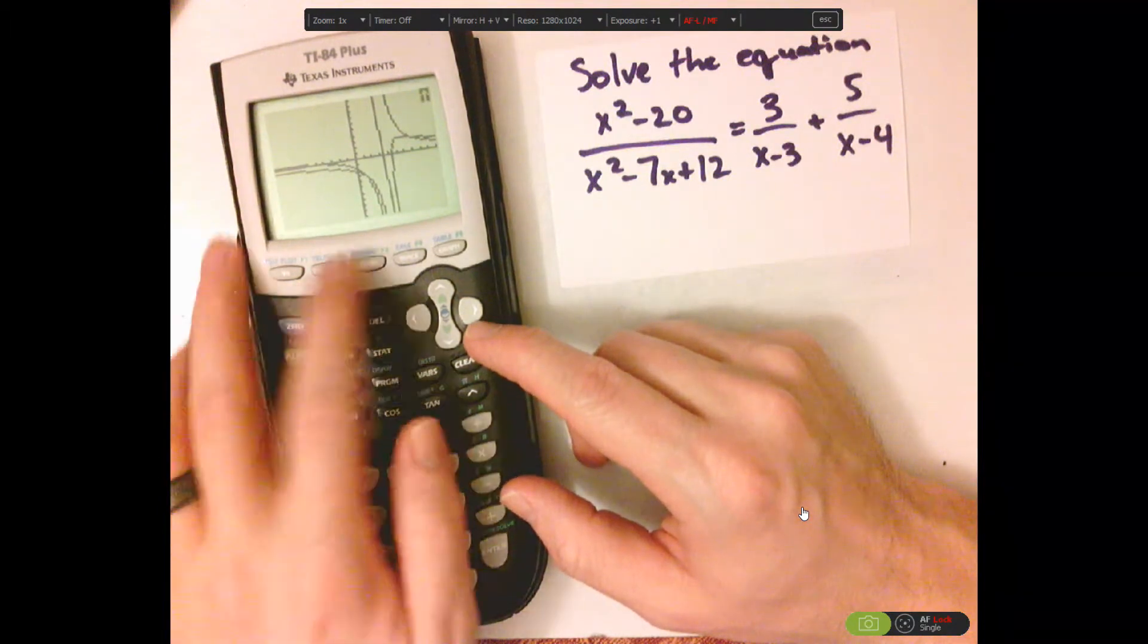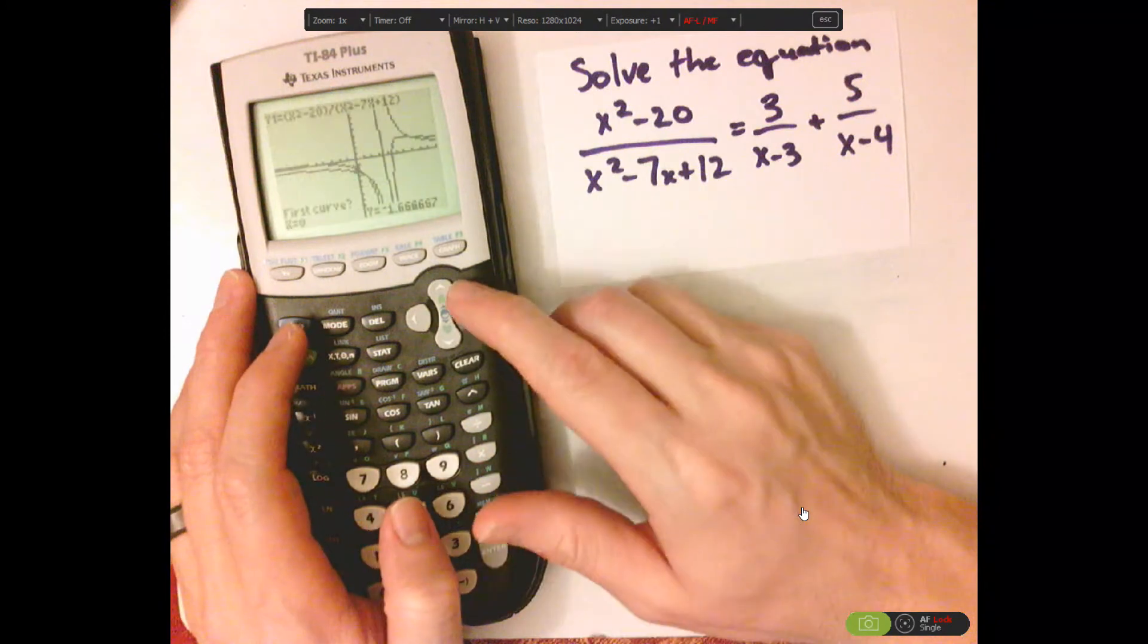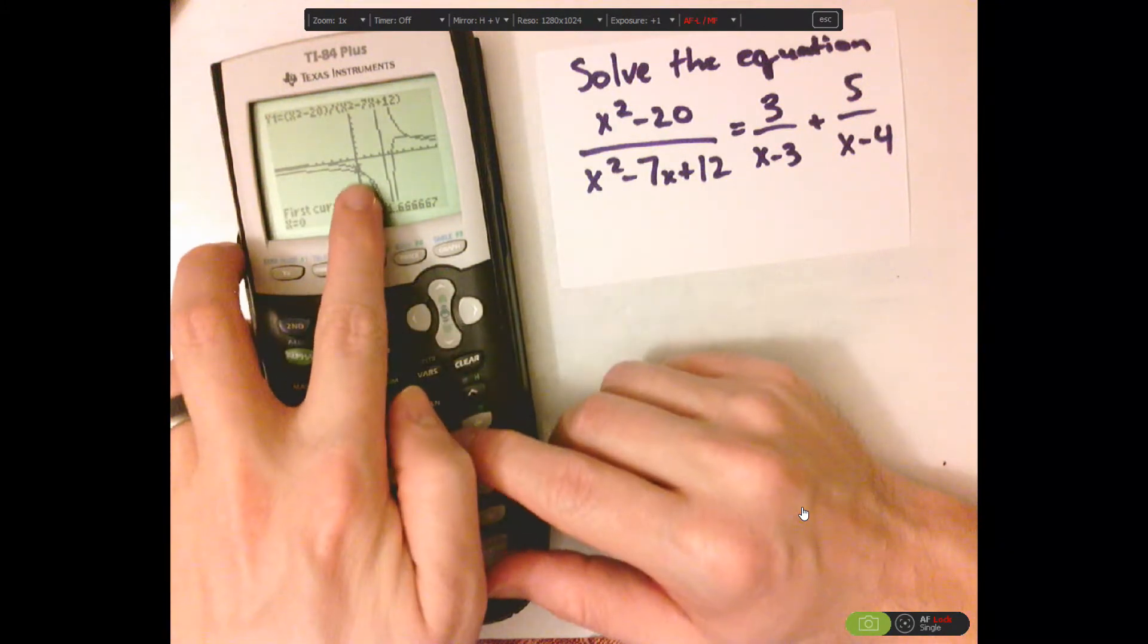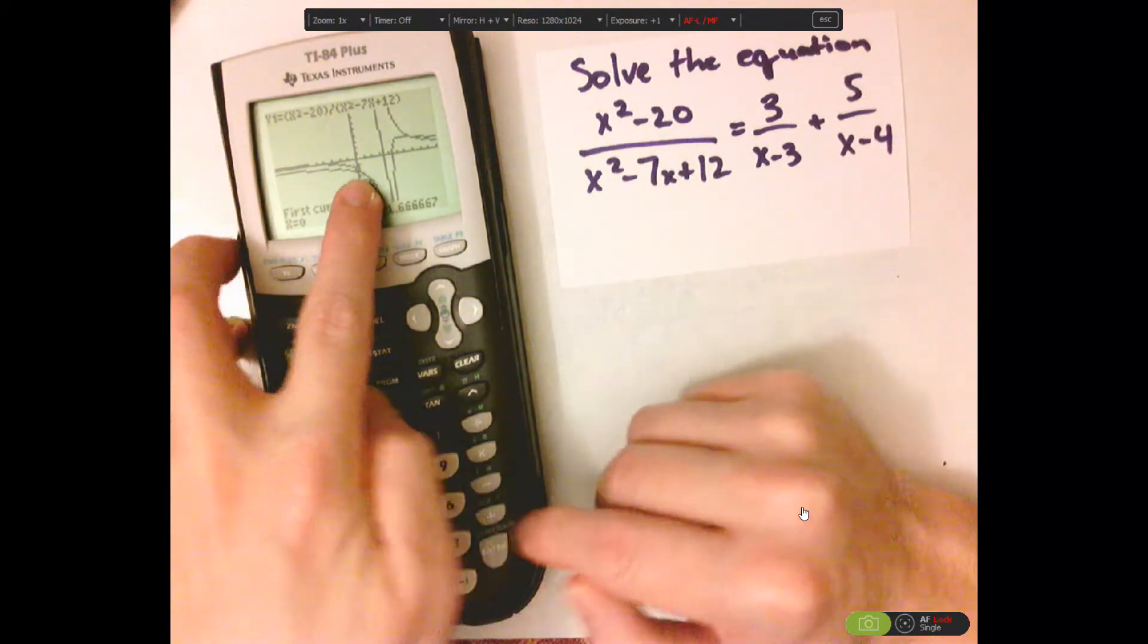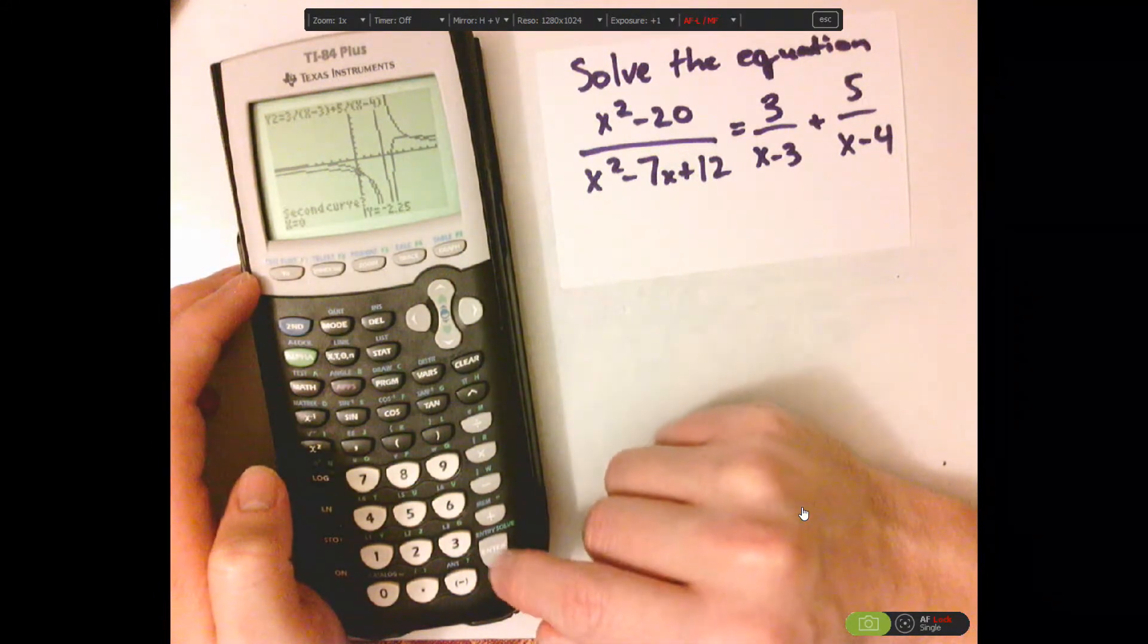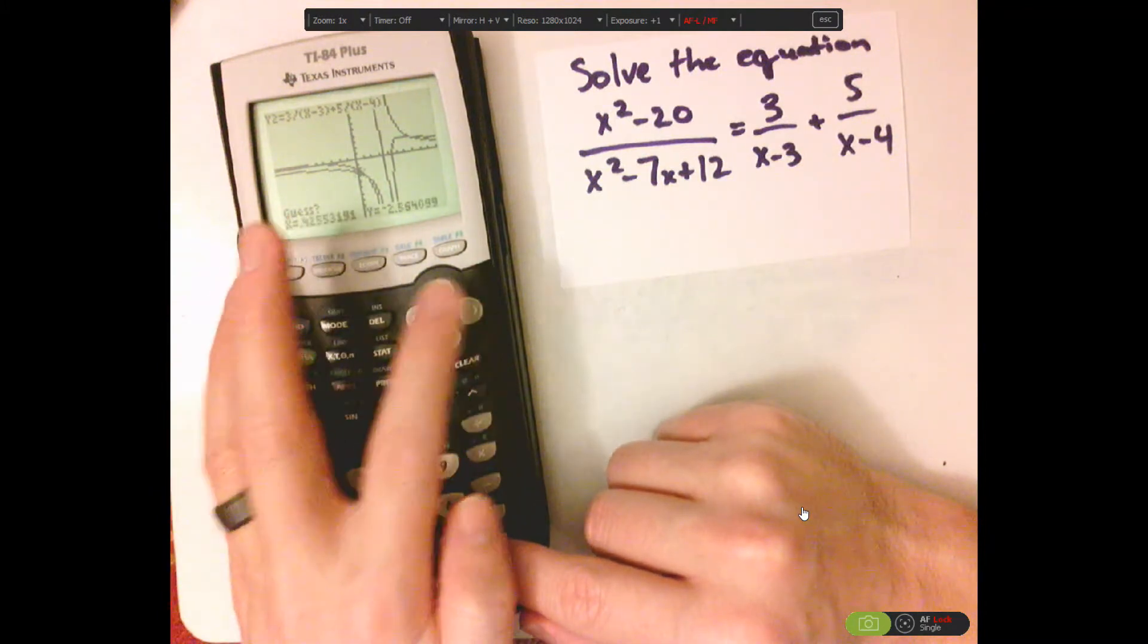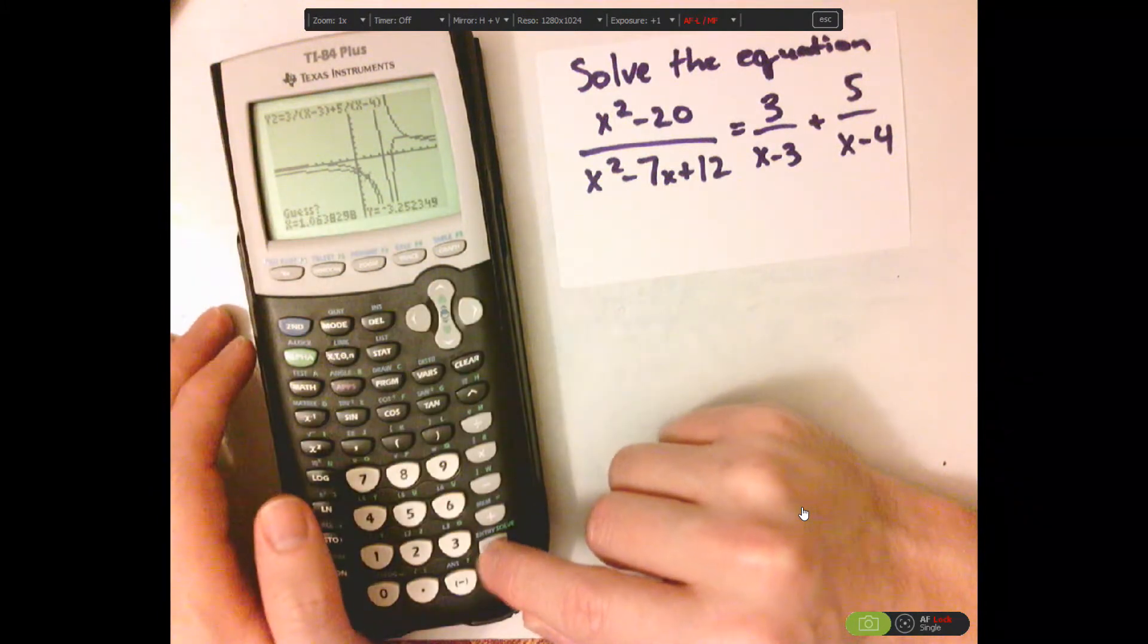So, you use second calc, and we're going to select intersect. We're already kind of towards this one. So, first curve, enter, second curve, enter, and then, I guess, somewhere over there.